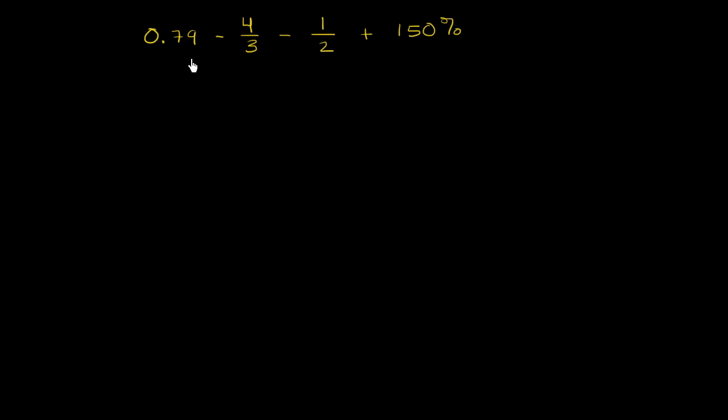So we have 0.79 minus 4 thirds minus 1 half plus 150%. So we have four different numbers written in different formats. Here it's a decimal, here we have two fractions, and then here we have a percentage.